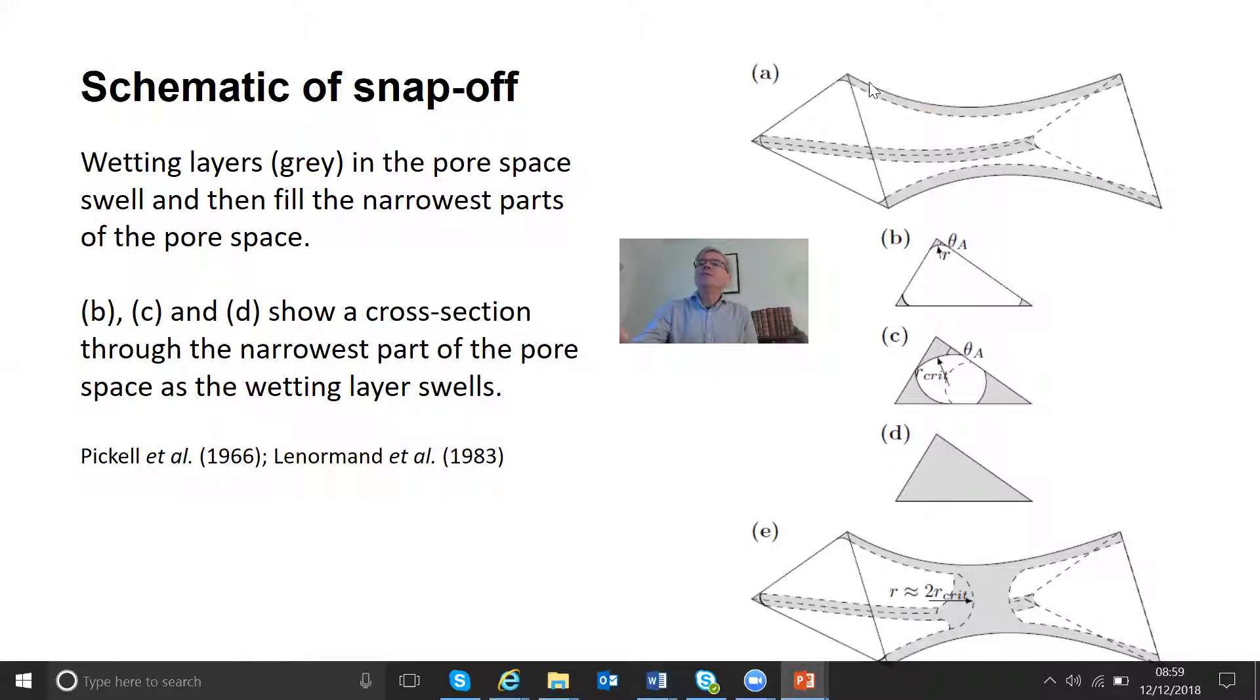So in these pictures here, what's shown in grey is the water and what's shown transparent will be the oil in the pore space. So when we inject water, which here is the wetting fluid, the water likes the surface, so it tends to collect in the corners.